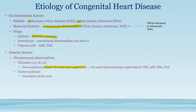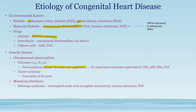Turner syndrome has a classic association with coarctation of the aorta. We also have mutations and deletions, including DiGeorge syndrome, which is a problem with the branchial arches. This results in an interrupted aortic arch — another name for complete coarctation, meaning the aorta is completely closed off. DiGeorge syndrome is also associated with truncus arteriosus and tetralogy of Fallot.